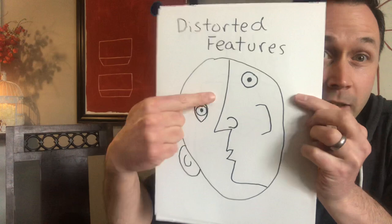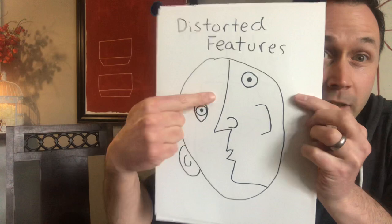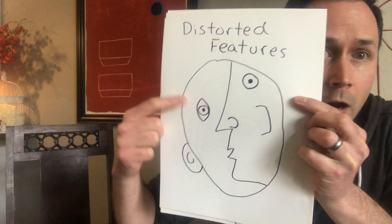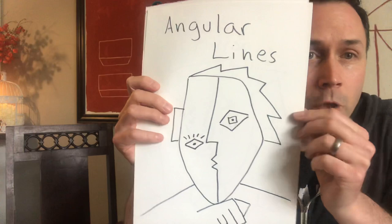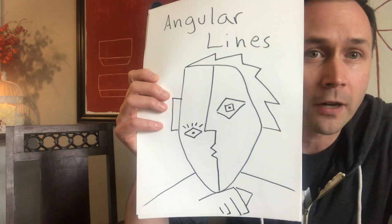Another thing that cubism artists like to do is have a little bit of fun and distort the features. Maybe put an eyeball over here, put an eyeball sideways, maybe make the nose really long and elongated. Just have some fun with it. Sometimes if you look at cubism art, they don't even use curvy lines at all — just angular lines, lots of straight jagged lines. You can go that direction as well.